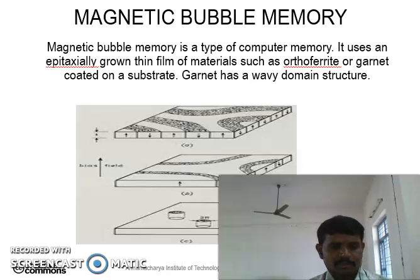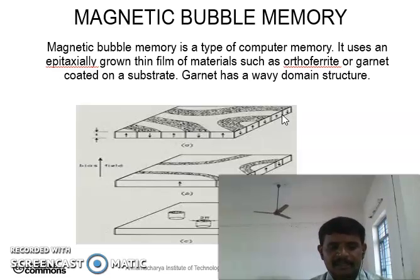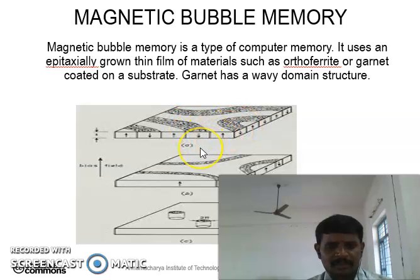Now we are going to discuss the magnetic bubble memory. Magnetic bubbles are soft magnetic materials. Magnetic domains with a few micrometers in diameter are embedded in a matrix with different orientations. We are going to observe the different orientations of the magnetic bubbles. Magnetic bubbles are based on magnetic materials.